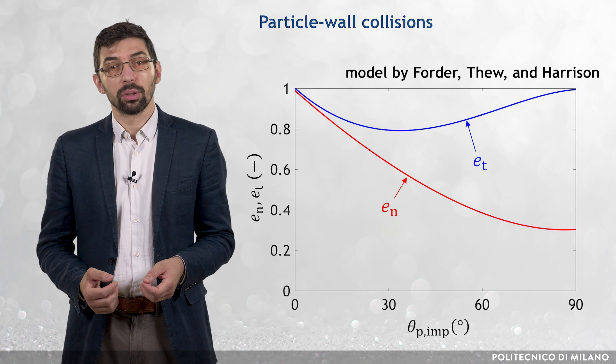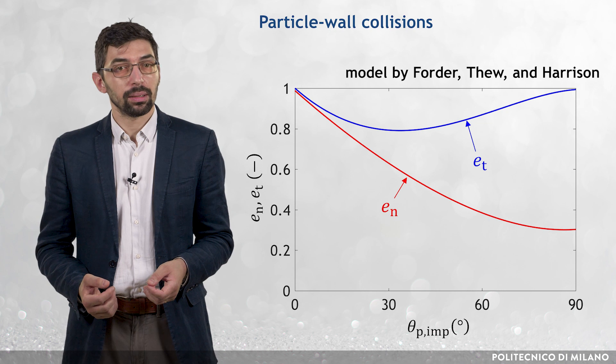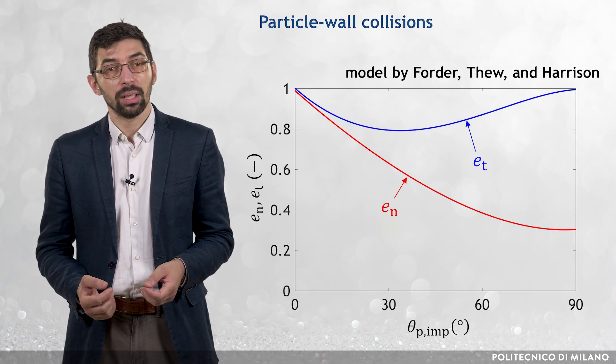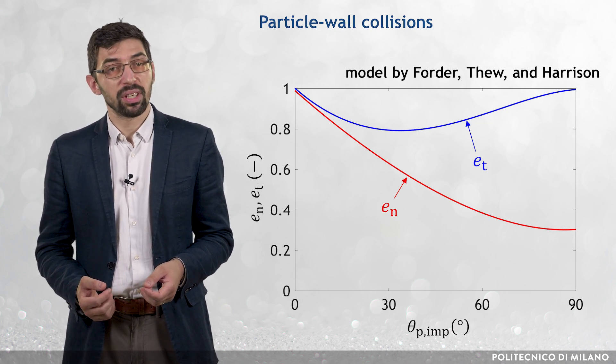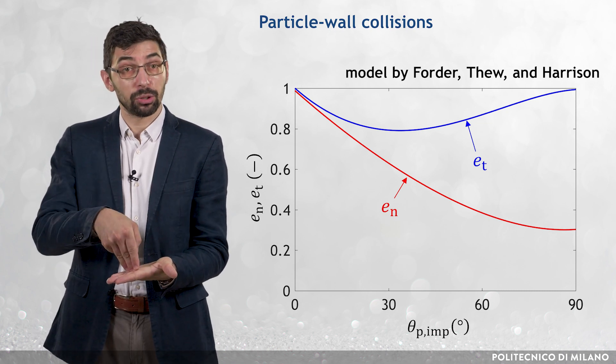According to Forder model, the tangential restitution coefficient is rather minorly affected by θp-imp, whereas the normal restitution coefficient strongly decreases with increasing θp-imp, reaching the minimum value for normal impingement.